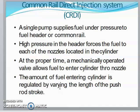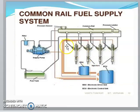One common system is the Common Rail Direct Injection system, shortly called CRDI. In this system, a single pump supplies fuel under pressure to a fuel header or common rail. The high pressure in the header forces fuel to each nozzle located at the top of the engine cylinder. At the proper time, mechanically operated valves allow the fuel to enter the cylinder through the nozzle, and the amount of fuel is regulated by varying the length of the push rod stroke.